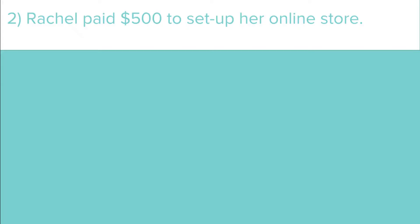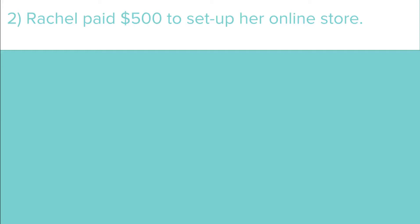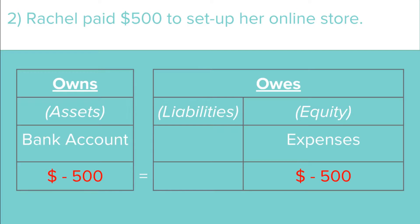Next, Rachel sets up her online store and it is now up and running. She paid $500 for this. So what the business owns is reduced by $500, while what the business owes is reduced by $500 as well. The equation remains balanced.